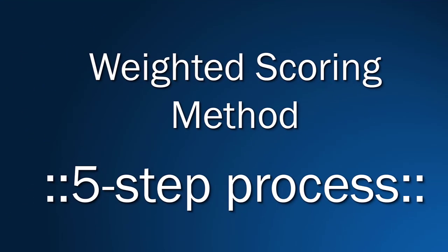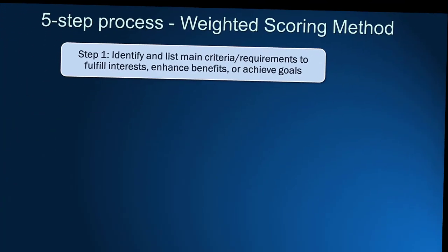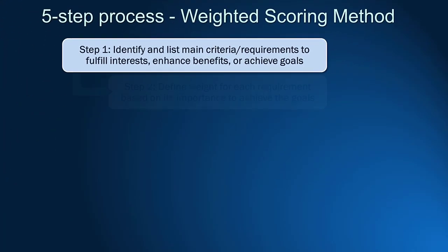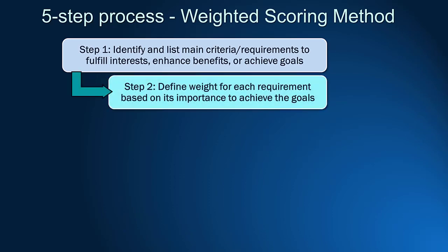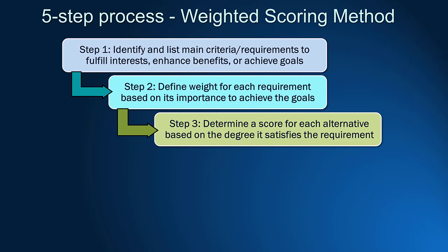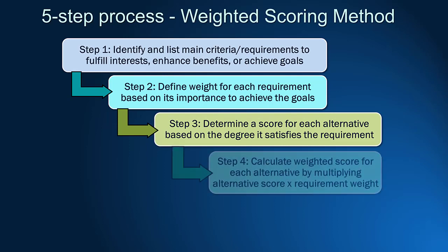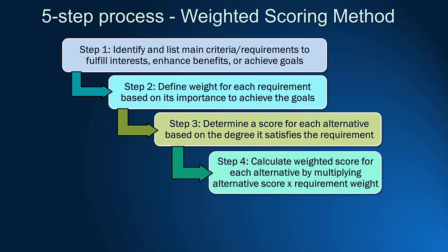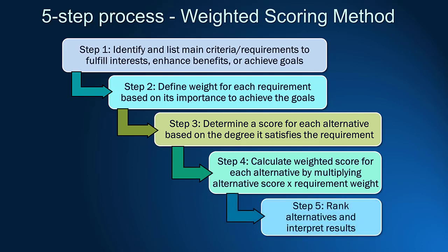The weighted scoring method can be explained in five easy steps. First, define the objective and requirements. Second, grade each requirement's importance with weights. Three, identify alternatives to achieve the objective. Four, give scores to each alternative and calculate the total weighted score. Finally, rank alternatives and interpret the results. Let's see the details of each step in the next slides.